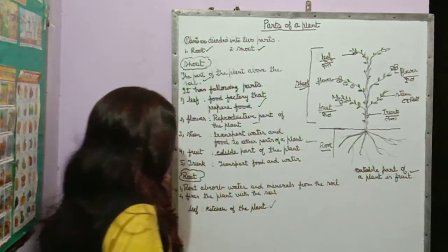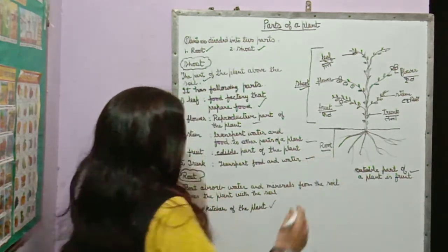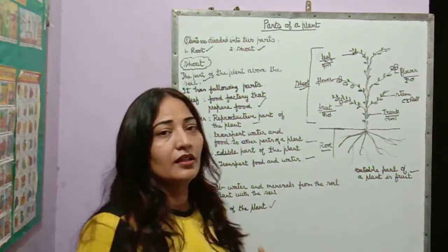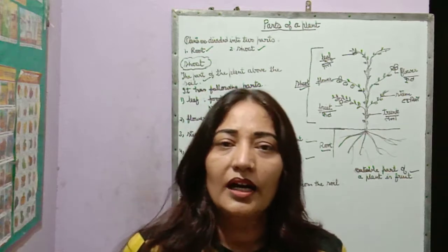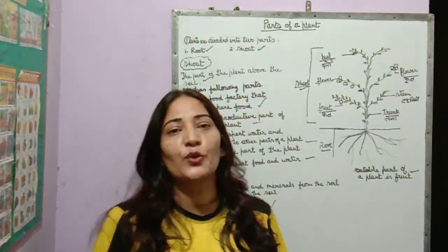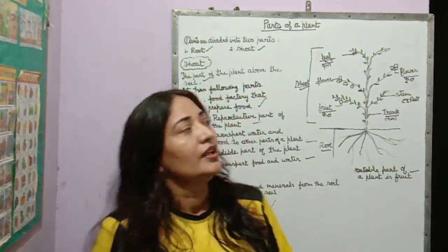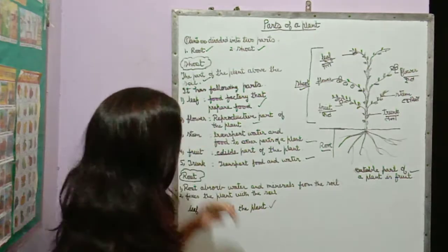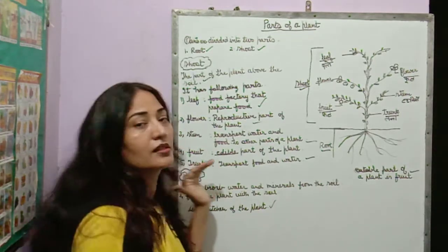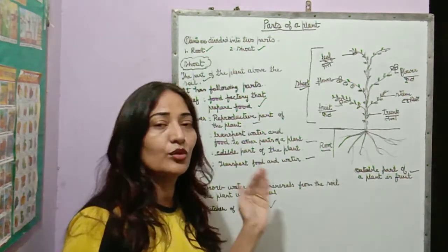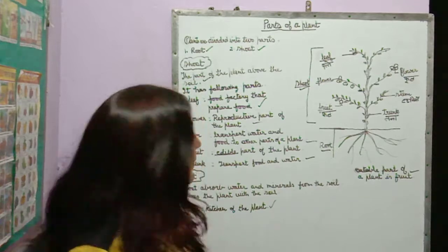Next, trunk. We can use the trunk to transport food and water to other parts of a plant. Now we have learnt the different parts of the shoot system — coins and branches are in the fall.